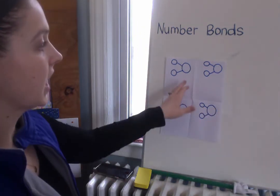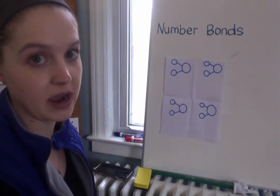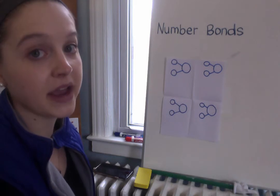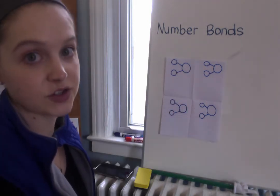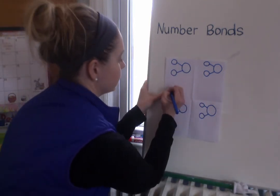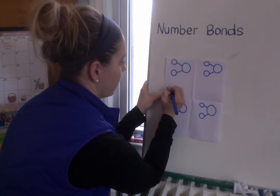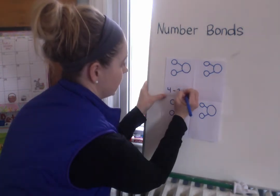All right now I'm gonna give you four different subtraction problems that you're gonna copy down on your paper and your job is going to be to fill in the number bond to match those subtraction problems. So in our first box your subtraction problem is going to say four minus two equals.